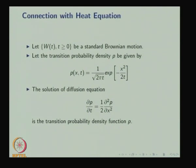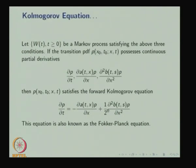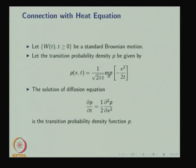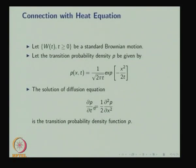The partial differential equation satisfied by the transition probability density function p is known as a diffusion equation, also called the forward Kolmogorov equation or Fokker-Planck equation: ∂p/∂t = −∂(A·p)/∂x + (1/2)∂²(B·p)/∂x². This is possible because W(t) is both a Markov process and a Gaussian process. For the standard Brownian motion (W(0) = 0, μ = 0, σ² = 1), solving this PDE gives the transition probability density p = (1/√(2πt)) · exp(−x²/(2t)), which is the PDF of a normal distribution with mean 0 and variance t. The corresponding diffusion equation is ∂p/∂t = (1/2) ∂²p/∂x².